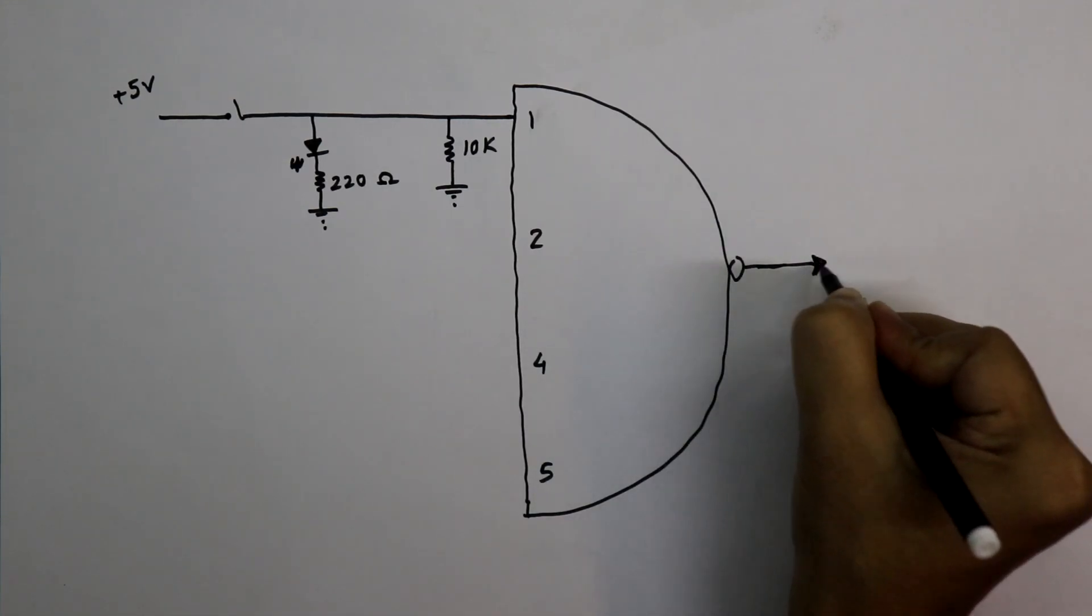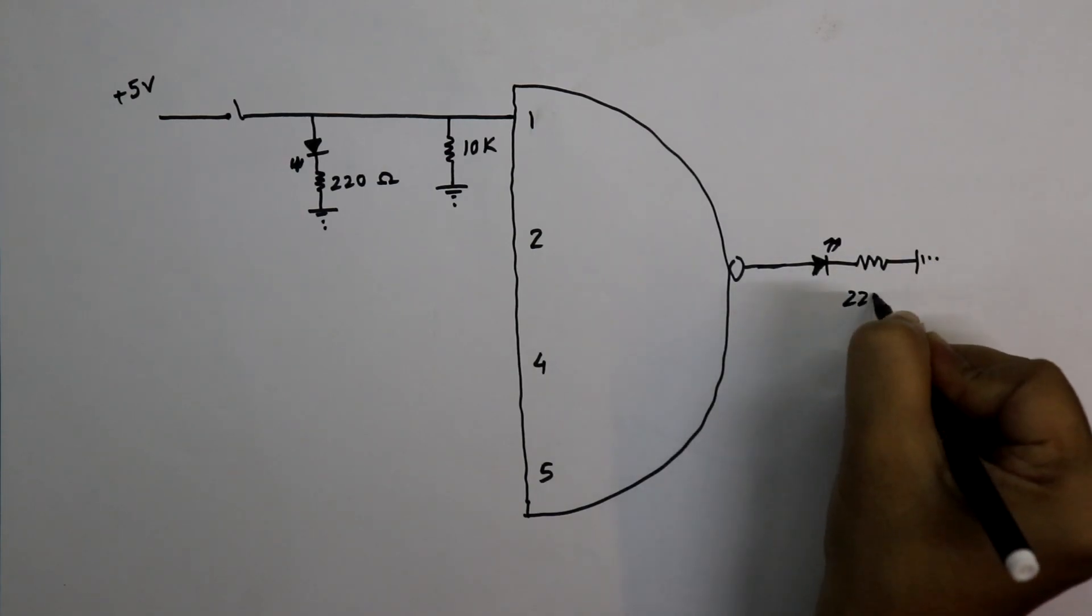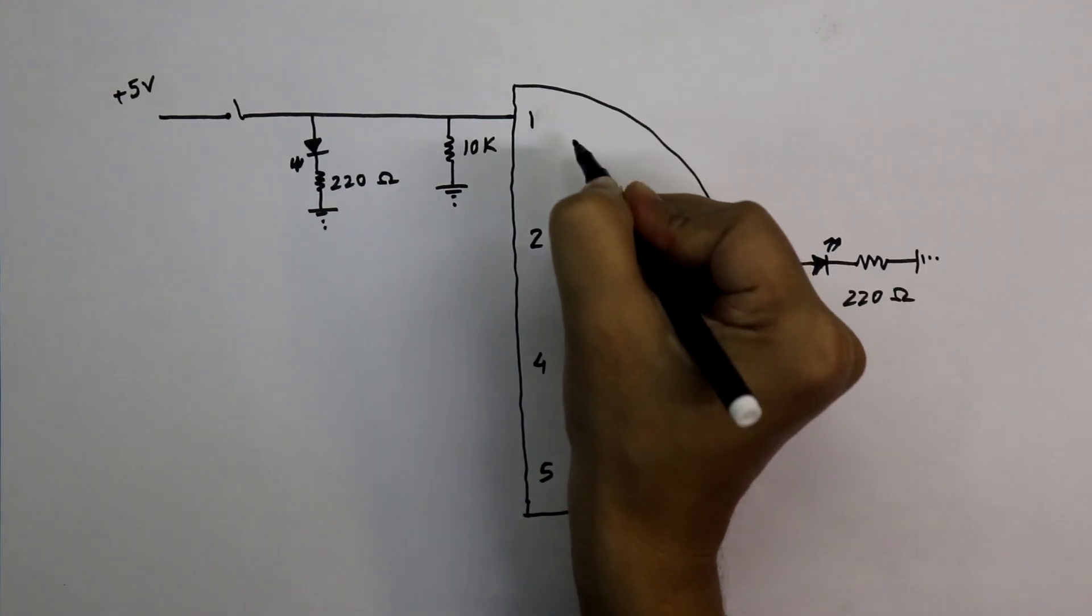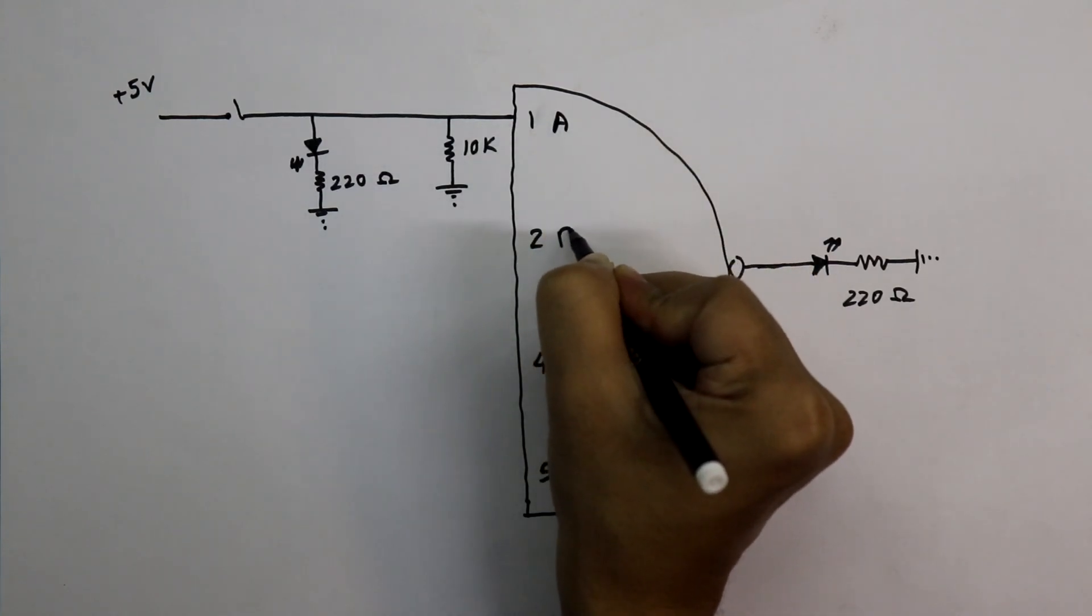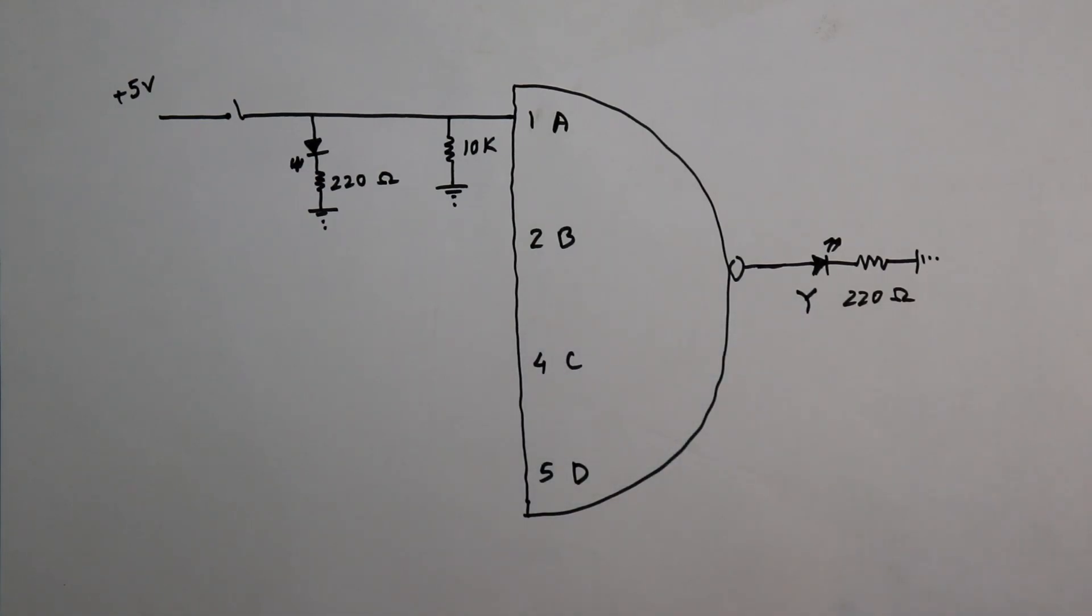Now to see the output, we have to connect LED. The resistor value is 220 ohms. This is input A, input B, input C and input D. And it is output Y.